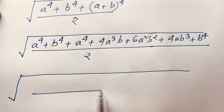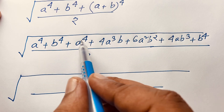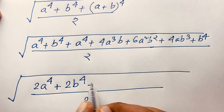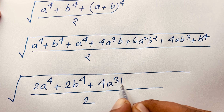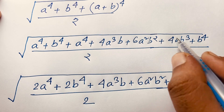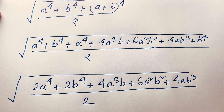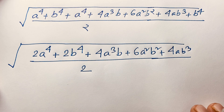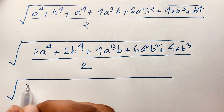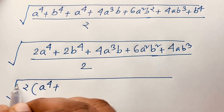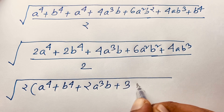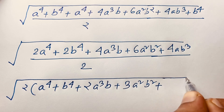After substitution, we have a⁴ plus a⁴ which gives 2a⁴, and b⁴ plus b⁴ which gives 2b⁴, plus 4a³b plus 6a²b² plus 4ab³. Since 2 is common throughout, we factor it out. Dividing each term by 2 gives: a⁴ plus b⁴ plus 2a³b plus 3a²b² plus 2ab³.